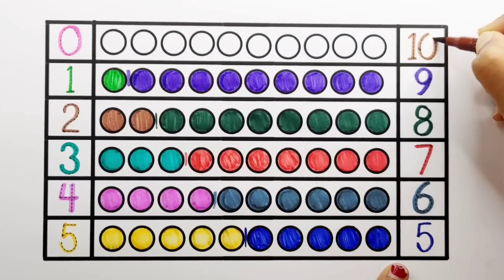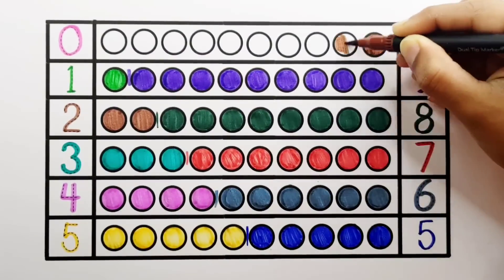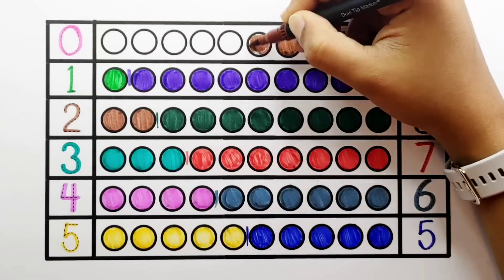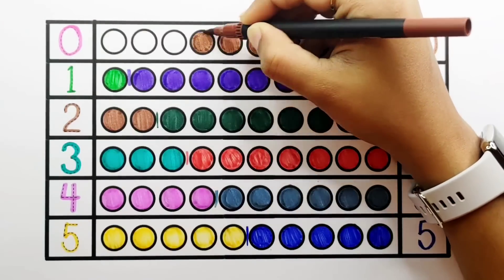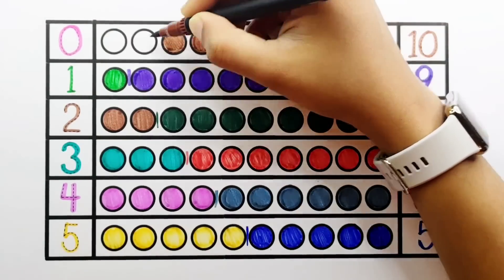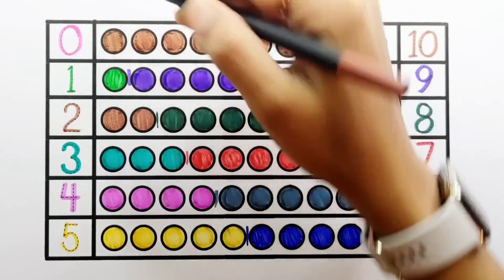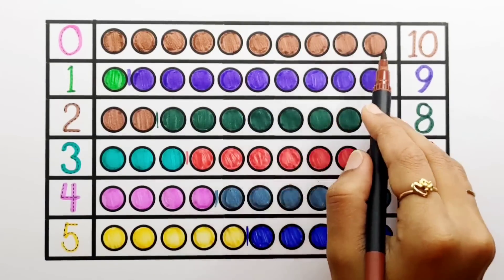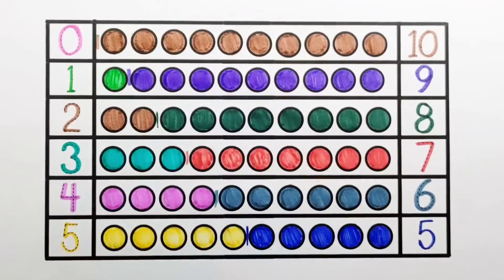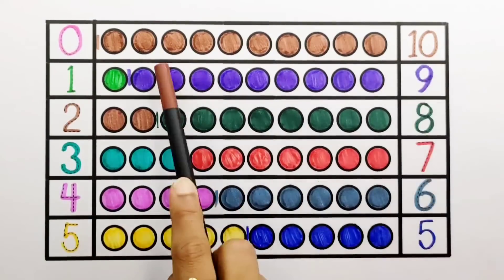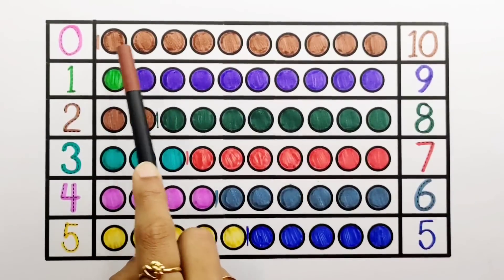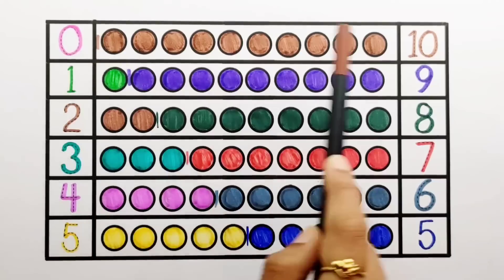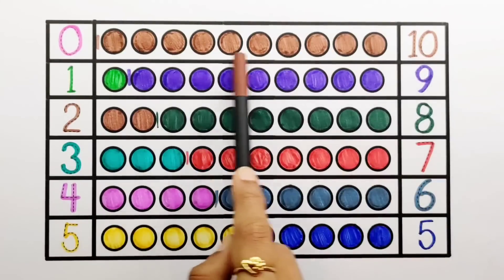10 — 1, 2, 3, 4, 5, 6, 7, 8, 9, 10 — 10 balls. 0 plus 10 equals 10.